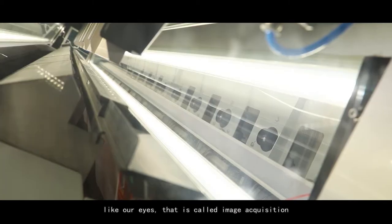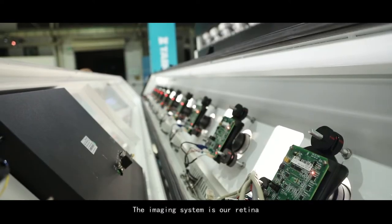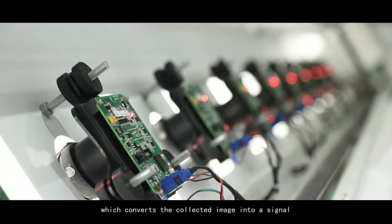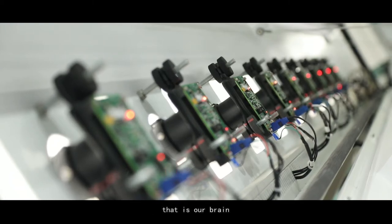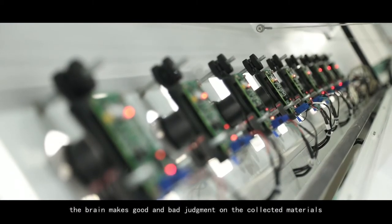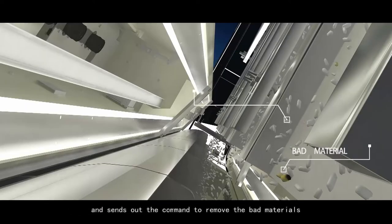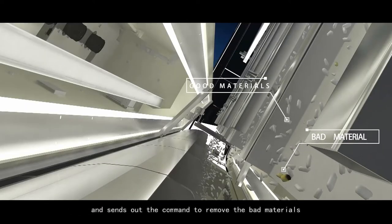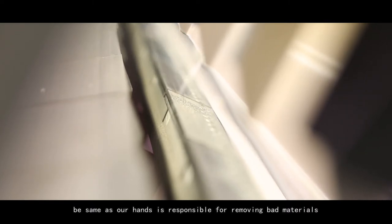That is called image acquisition. In order to see more clearly, the background plate achieves a clearer display of materials. The imaging system is our retina, which converts the collected image into a signal and transmits it to the imaging system. That is our brain. The brain makes good and bad judgment on the collected materials and sends out the command to remove the bad materials. Finally, the spray valve, same as our hands, is responsible for removing bad materials.